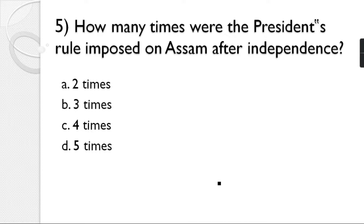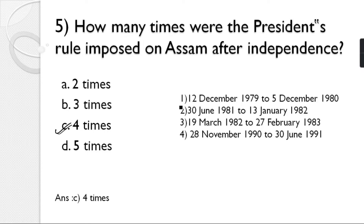Question number 5: How many times was President's Rule imposed on Assam after independence? Options: 2, 3, 4, or 5 times. The correct answer is option C — 4 times. The periods were: 1st: 12th December 1979 to 5th December 1980; 2nd: 3rd June 1981 to 13th January 1982; 3rd: 19th March 1982 to 27th February 1983; 4th: 23rd November 1990 to 30th June 1991.